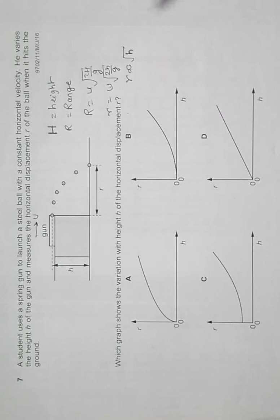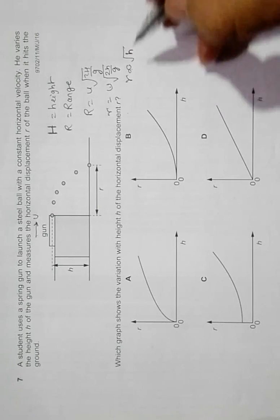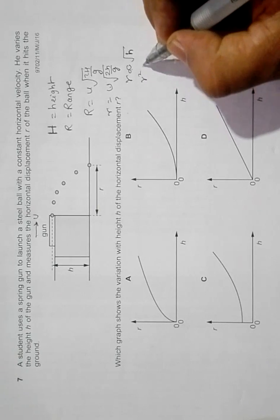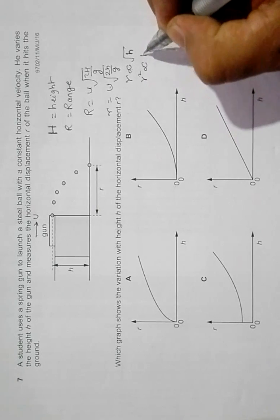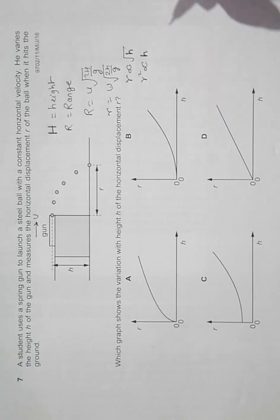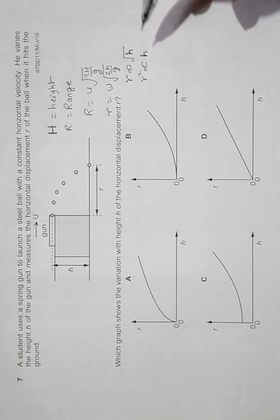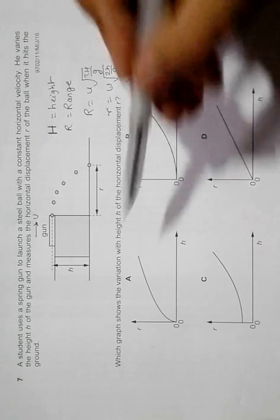The graph will be somewhat like this. If I square both sides, it will be r squared is proportional to h. So the graph of r and h in this case will be like choice number A.